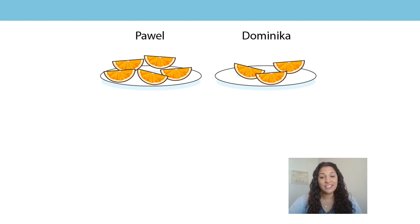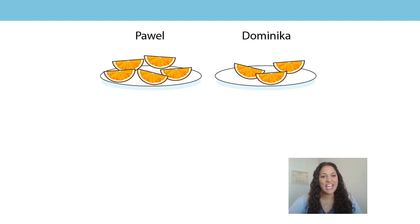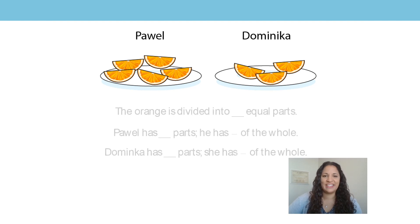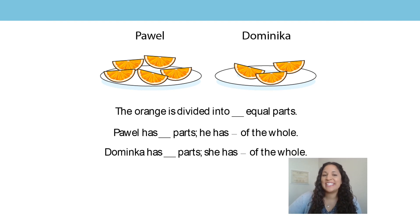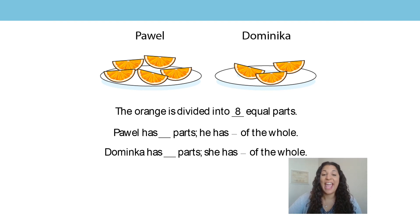You had to work out what fraction of the orange Powell and Dominica had once they'd shared it. Let's use these stem sentences to help us answer. The orange is divided into 8 equal parts because there are 8 equal parts of the orange.